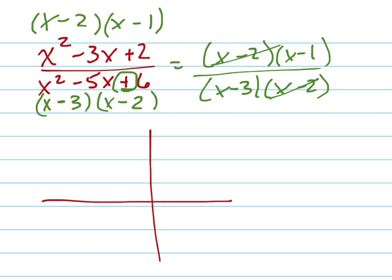Those cancel out, which means you have a hole at negative 2. But that doesn't mean that, I'm sorry, at 2, that doesn't mean that that can't be part of the range. So let's draw our graph. So this really equals x minus 1 over x minus 3. But you have a hole at 2 comma, plug in 2 here and here. And you get 1 over negative 1. Negative 1. 2 comma negative 1. There's a hole.